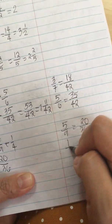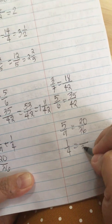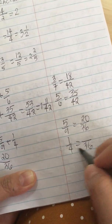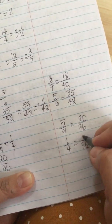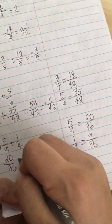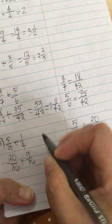Now the 1 fourth, we also have to change it. So 36 divided by 4 is 9. 9 times 1 is 9. So plus 9 over 36.